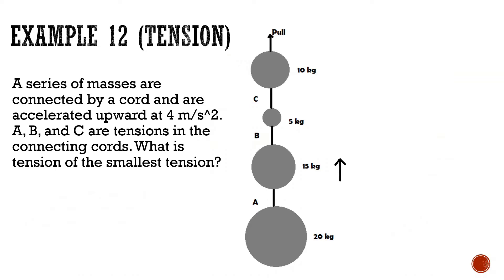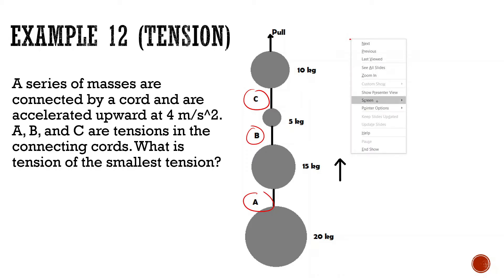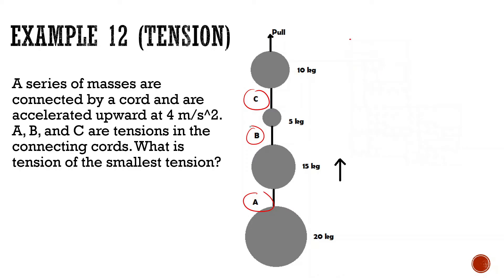Let's look at this next problem. A series of masses are connected by a chord and are accelerated upward at 4 meters per second squared. A, B, and C are tensions in the connecting chord. What is the smallest tension? Let's think about which one is going to have the least amount of tension.